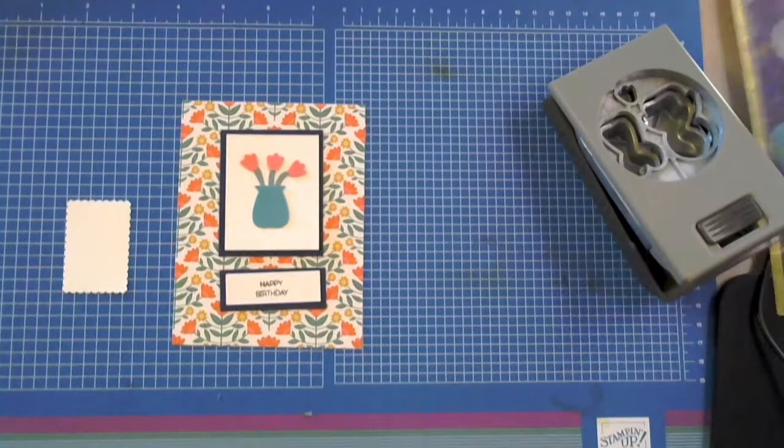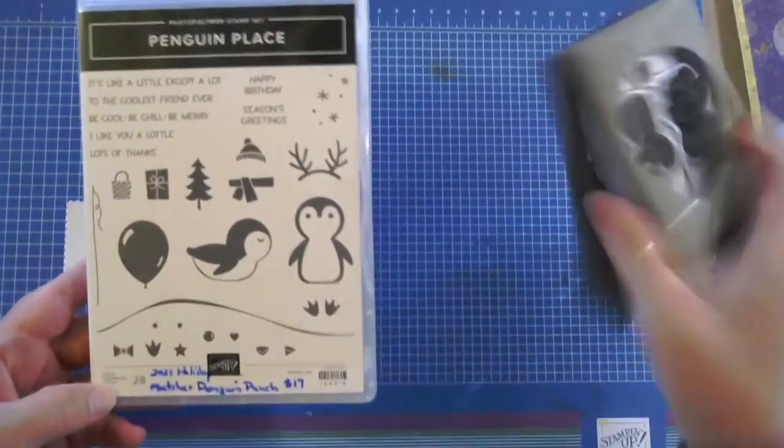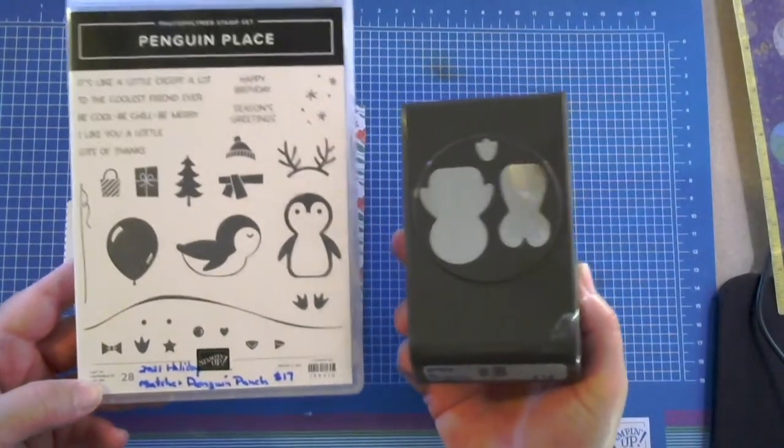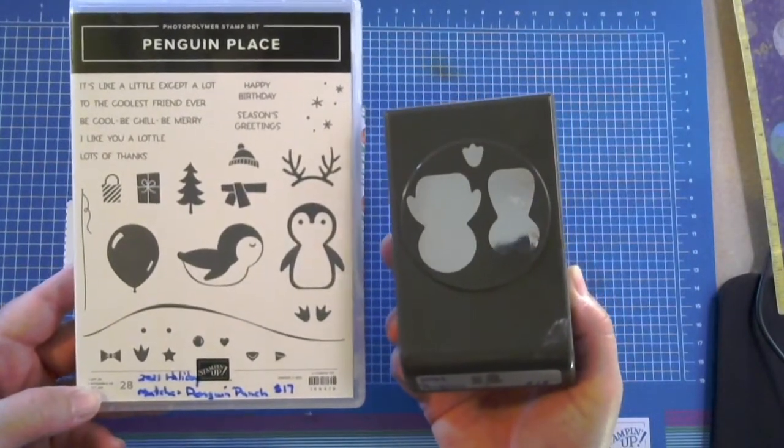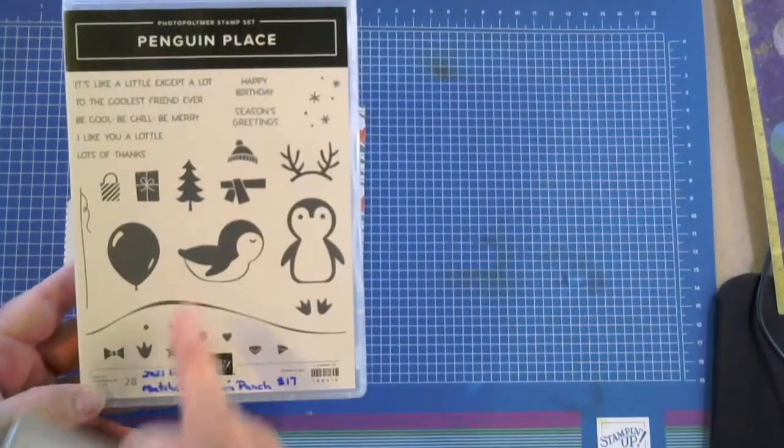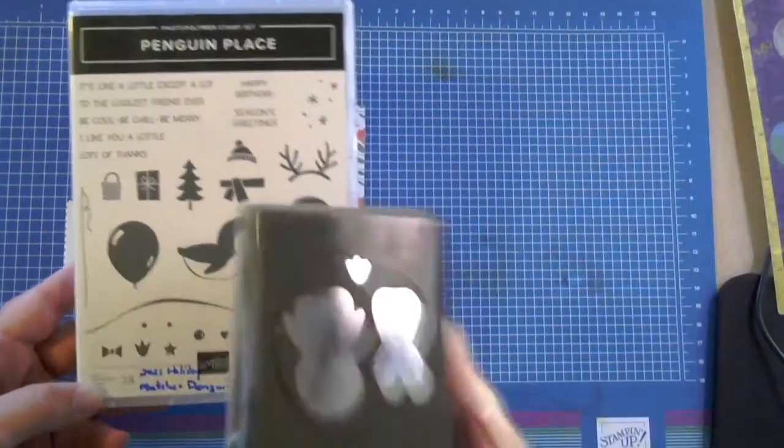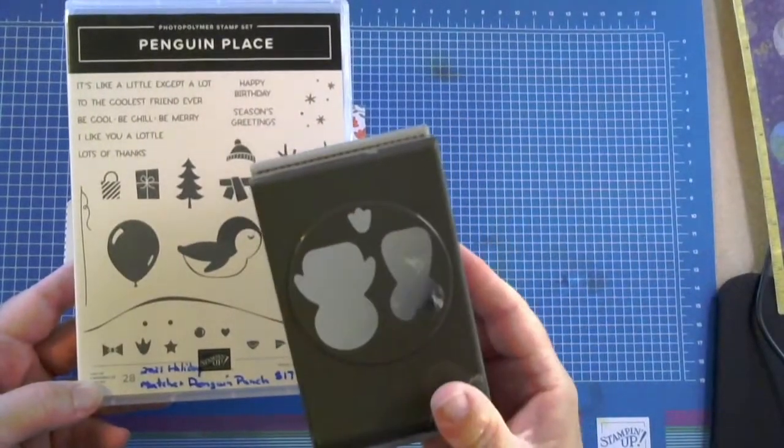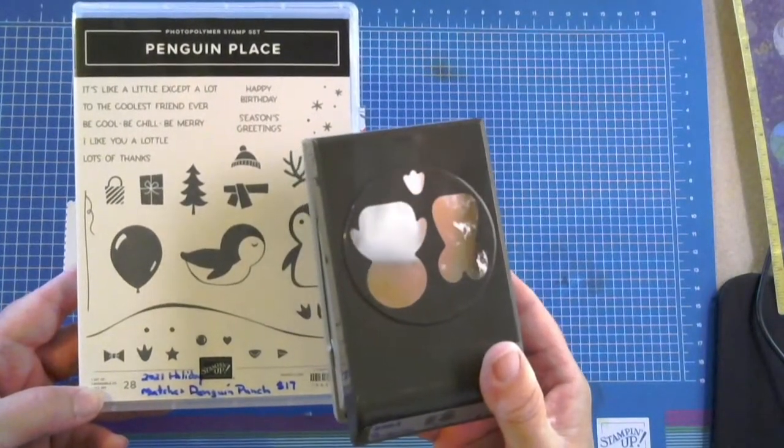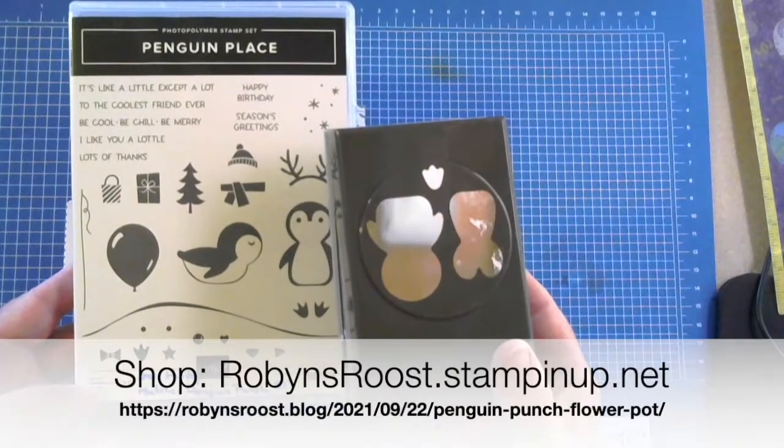Oh, and I think I forgot to show you, this is the matching stamp set that goes with the punch, and you're going to want to get it as a bundle because it's just so darn cute. The little penguins, you can make this guy sliding down the snow hill. But like I said, with the flower pot you can use it all year long.